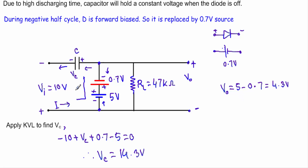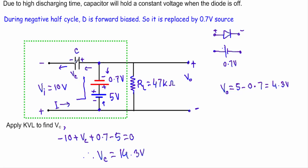To find the voltage Vc stored in the capacitor, I apply Kirchhoff's Voltage Law inside the green-shaded loop in the clockwise direction. Encountering Vi = −10V (positive terminal first), then +Vc, then +0.7V (negative terminal first), then −5V, and their sum equals zero. Solving: Vc = 10 − 0.7 + 5 = 14.3V. During the negative half cycle, the capacitor stores 14.3V.